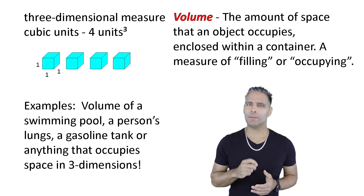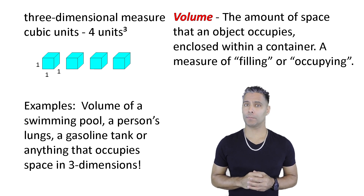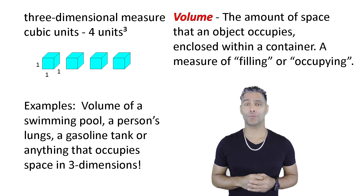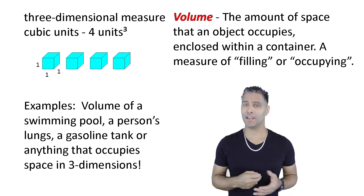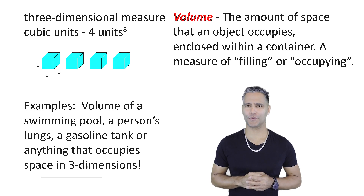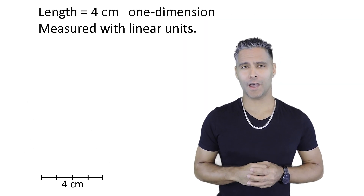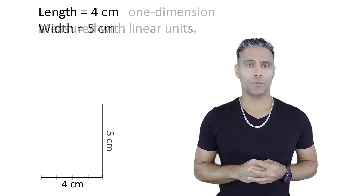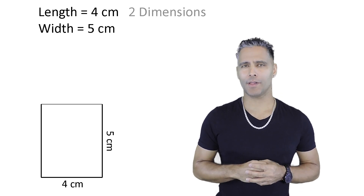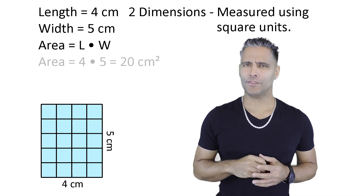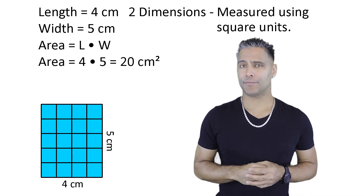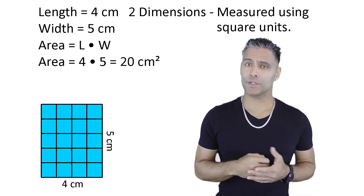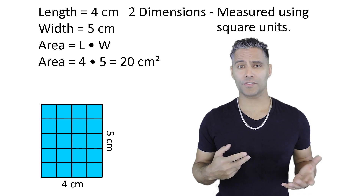We can build two-dimensional figures from lines which are one-dimensional, and we can build three-dimensional figures from two-dimensional objects or flat surfaces. Right here we have a one-dimensional line. If we add more lines, we can form the boundaries of a two-dimensional object. In this example, we have a four-by-five rectangle, which takes up an area of 20 square centimeters.